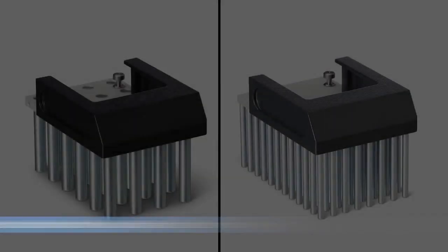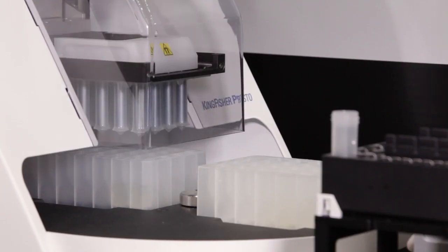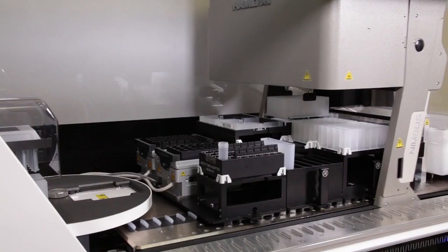You can choose between two magnetic head options to purify 24 or 96 deep well plates at a time, depending on your volume, throughput and reagent needs.